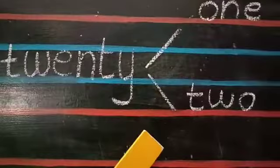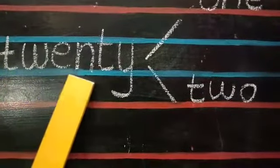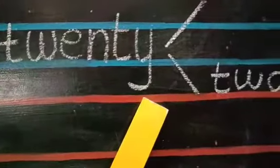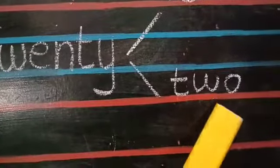After 21 comes 22. T-W-E-N-T-Y. Twenty. T-W-O. Two. Twenty-two.